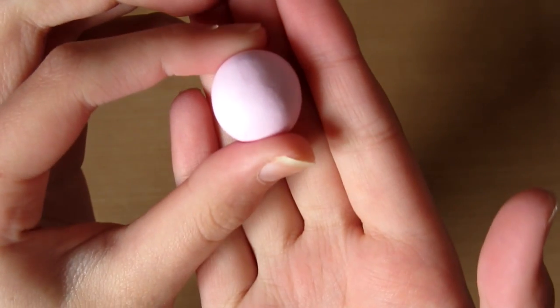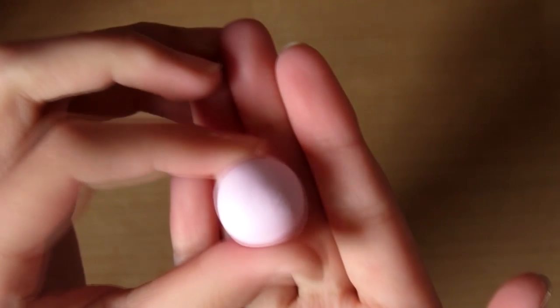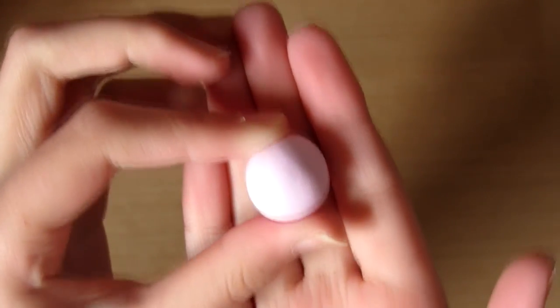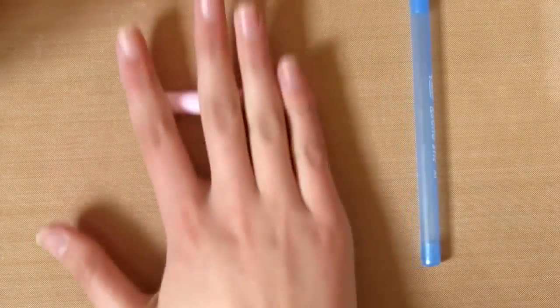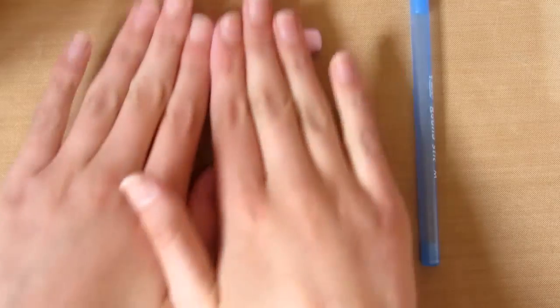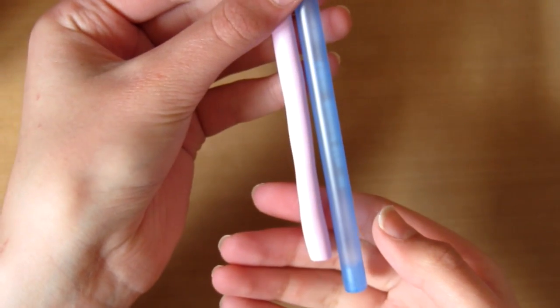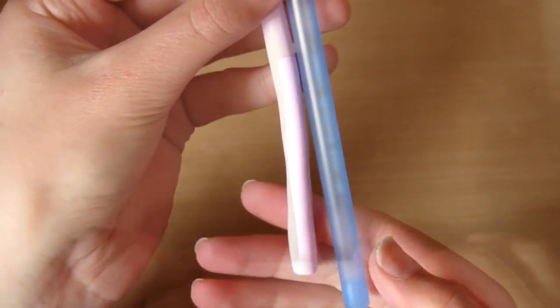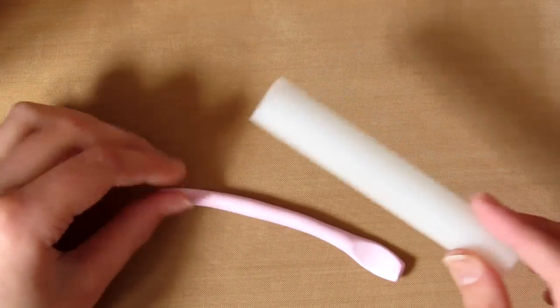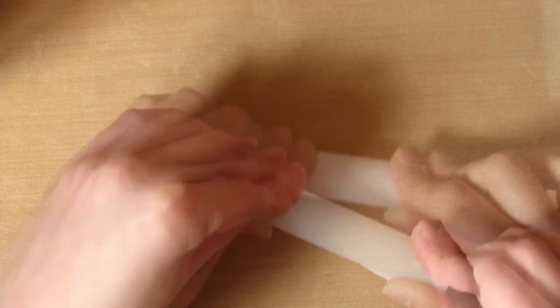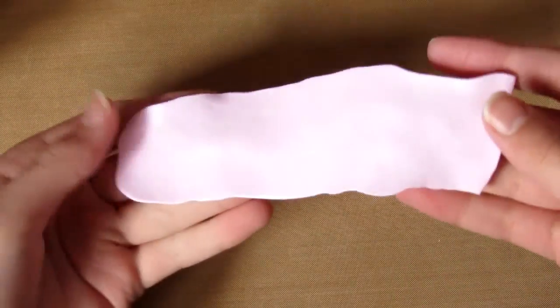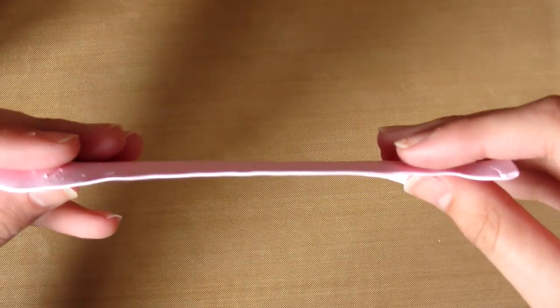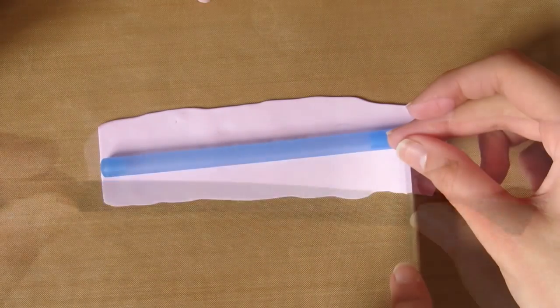Then you want to take some pink clay and you will need a lot of it as it has to cover the whole pen, and you just want to roll this into a log. You want it to be a bit smaller than the actual size of the pen as when we flatten it it will extend a bit. Then you just want to take a clay roller and roll this sideways so it gets wider, and it should be about a millimeter to two millimeters thick.